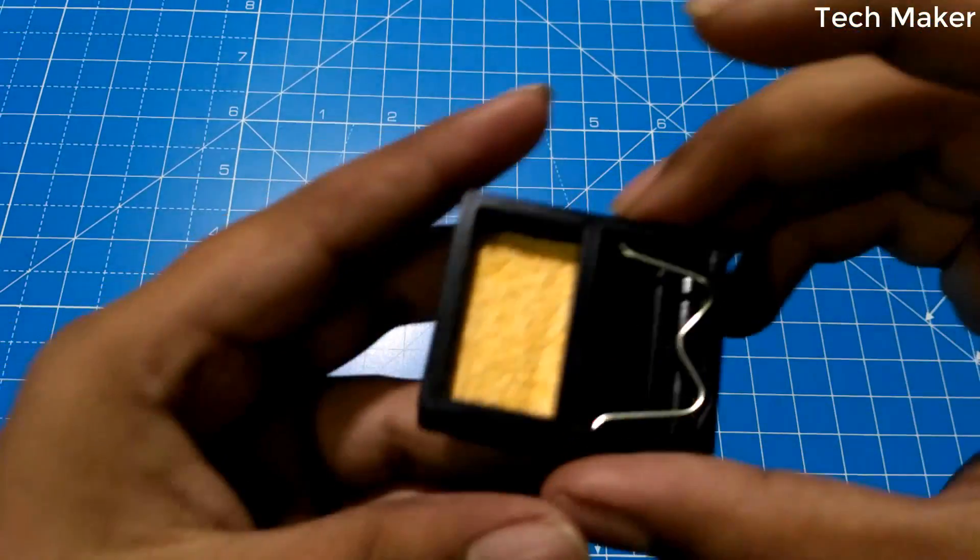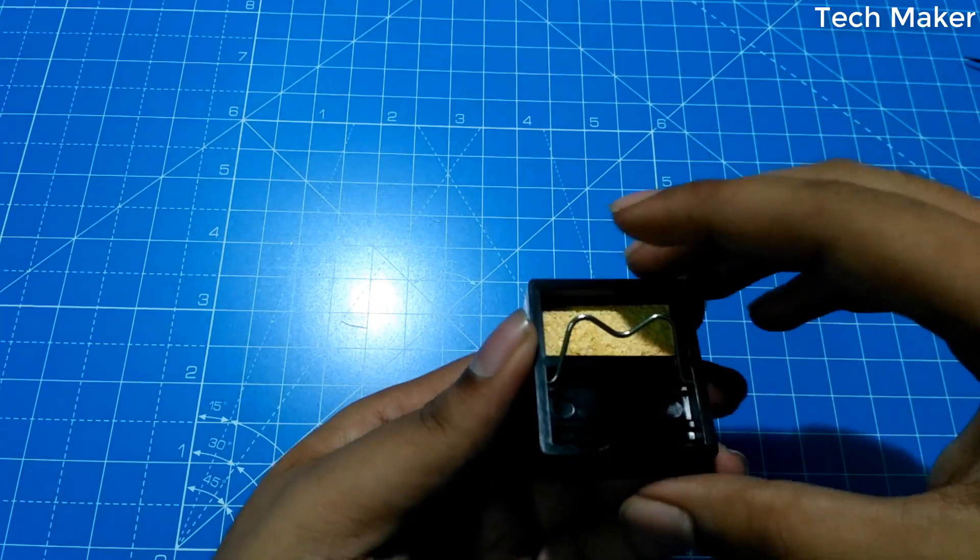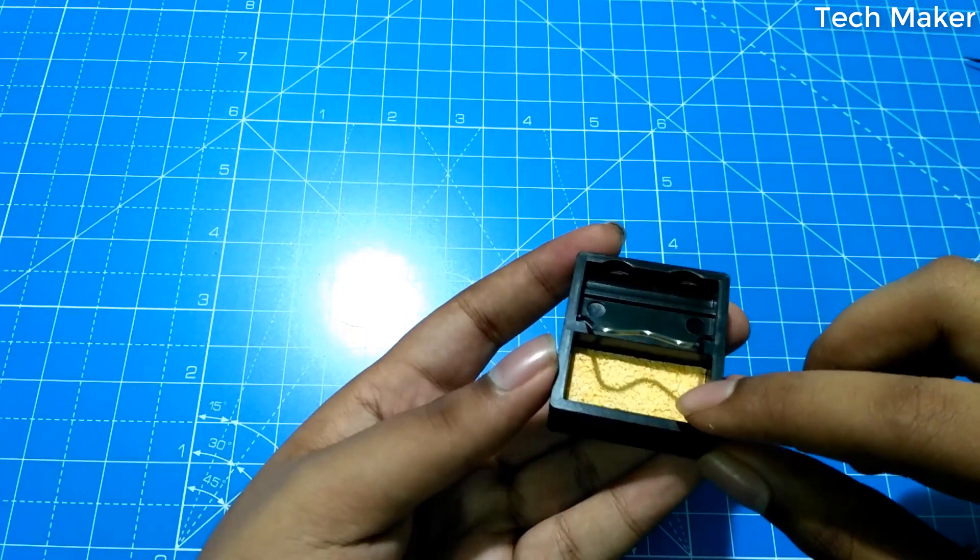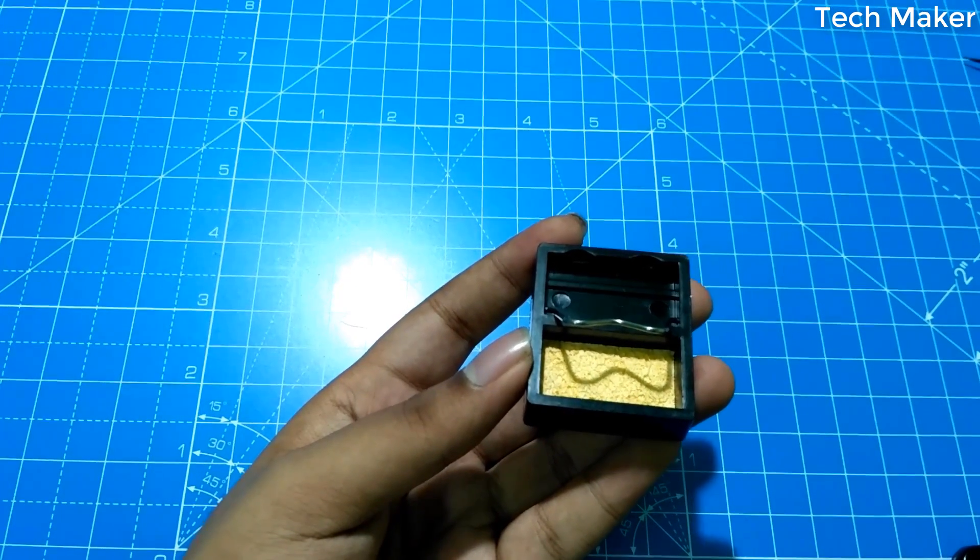And you will also get a stand so that you can place the soldering iron on it. And here you can also place the screws and soldering tip cleaner.